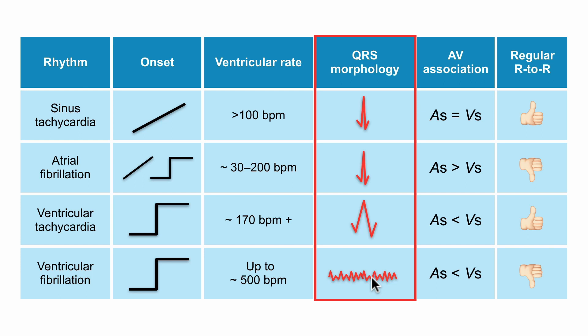The QRS discriminator looks to recognize when the QRS has become so different that a ventricular arrhythmia is assumed.